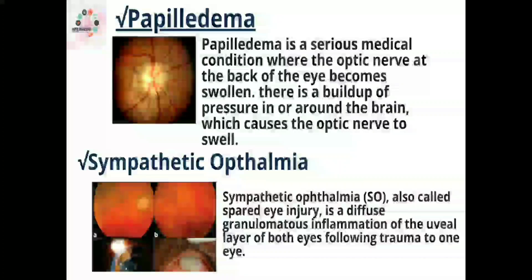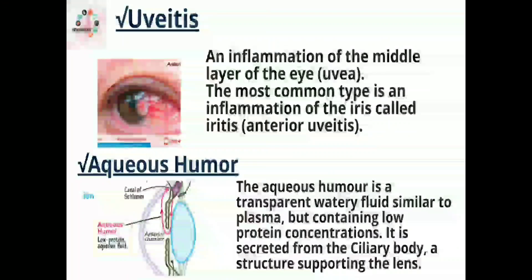Next we have sympathetic ophthalmia, also called sympathetic eye injury — a diffuse granulomatous inflammation of the uveal layer of both eyes following trauma to one eye.